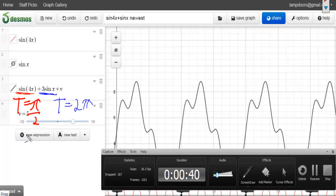And the period of sine 4x is pi over 2. The period of sine x or even 3 sine x is 2 pi. And then you just have to find the least common multiple of pi over 2 and 2 pi. Well, it should be pretty obvious that the least common multiple is 2 pi.